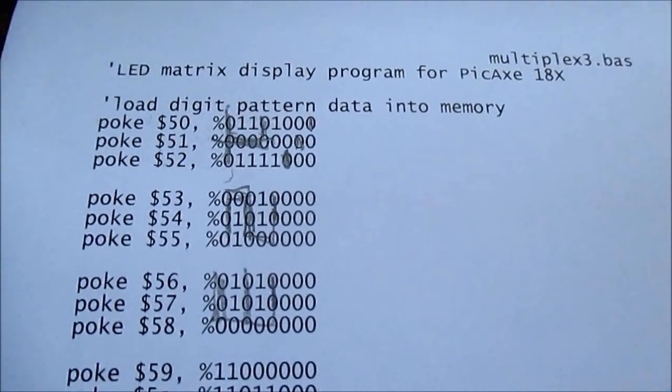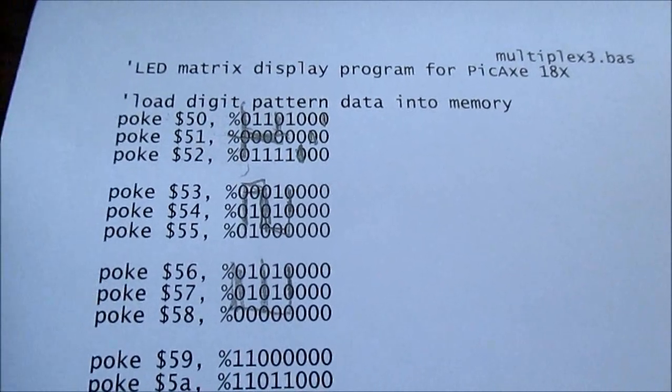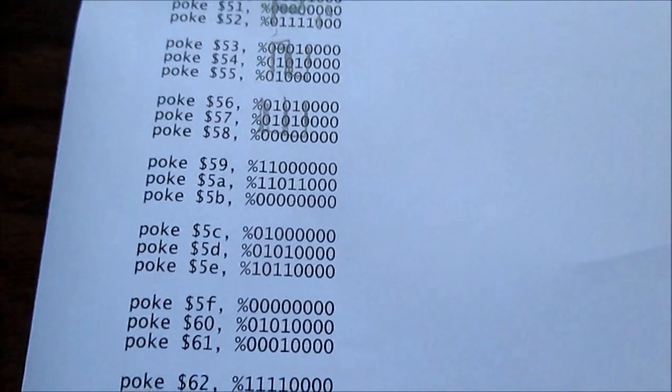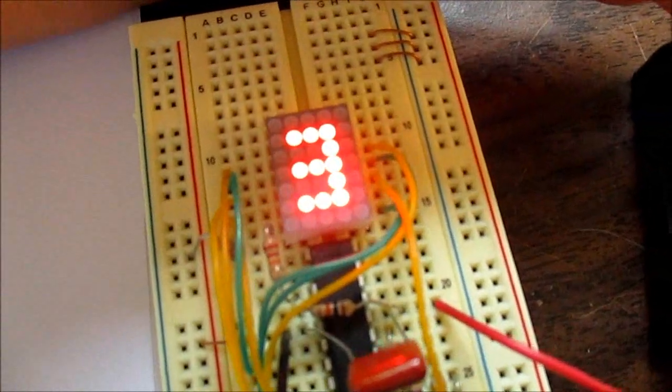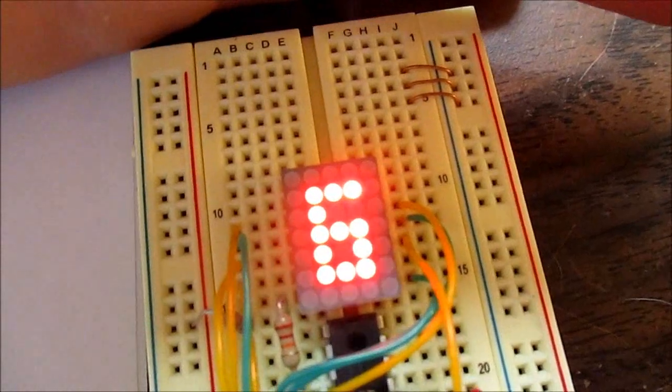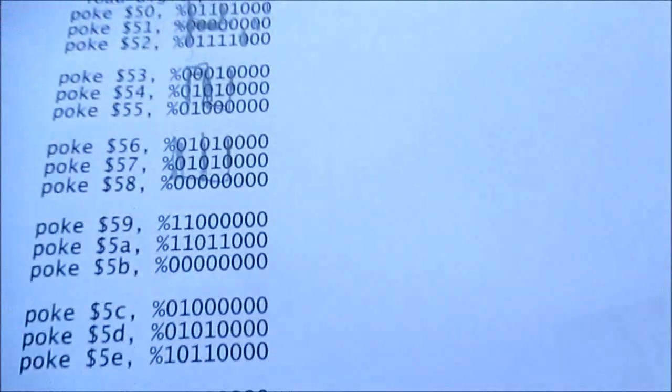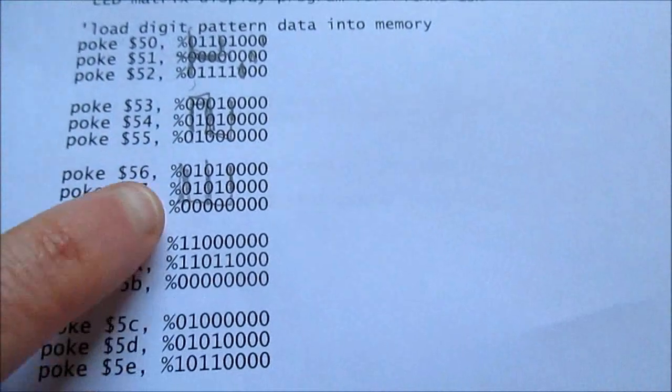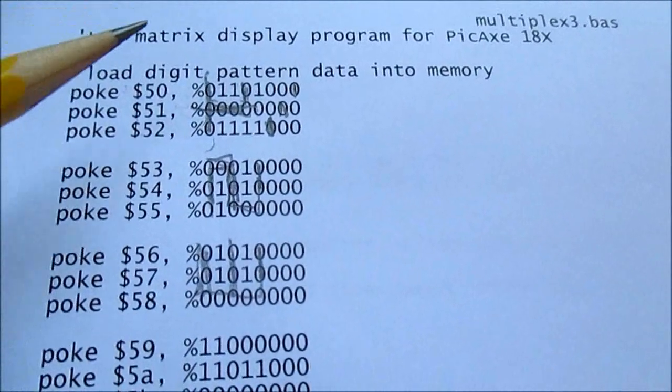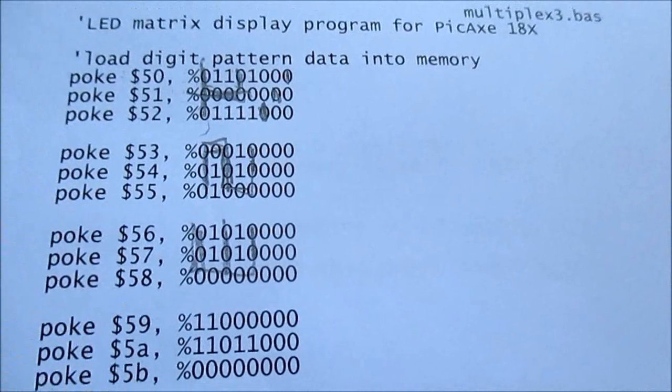Well, here's the program. First, I have to define what the characters look like. The microcontroller has no idea how to make a number 3, what it should look like to a human being. So you have to use a bit pattern, and that's what I've done here. I just stored it into RAM.